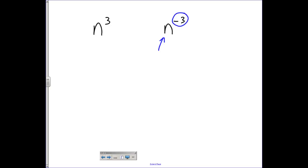One thing you need to know about negative exponents: they really mean reciprocals. A reciprocal means we're going to flip this thing over. So if I have n to the negative third power, what it really means is 1 over n to the positive third power.